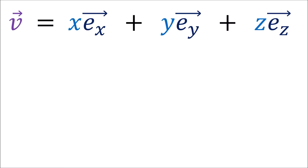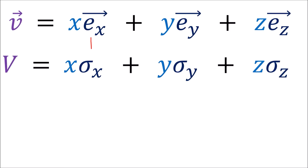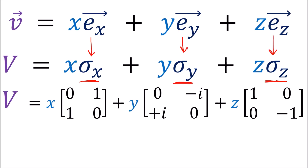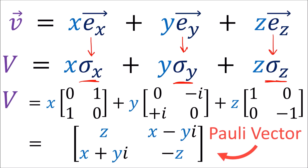If we want to do rotations with the sigma matrices instead, we rewrite a vector v by replacing the xyz basis vectors with sigma x, sigma y, and sigma z. And this gives us our Pauli vector.